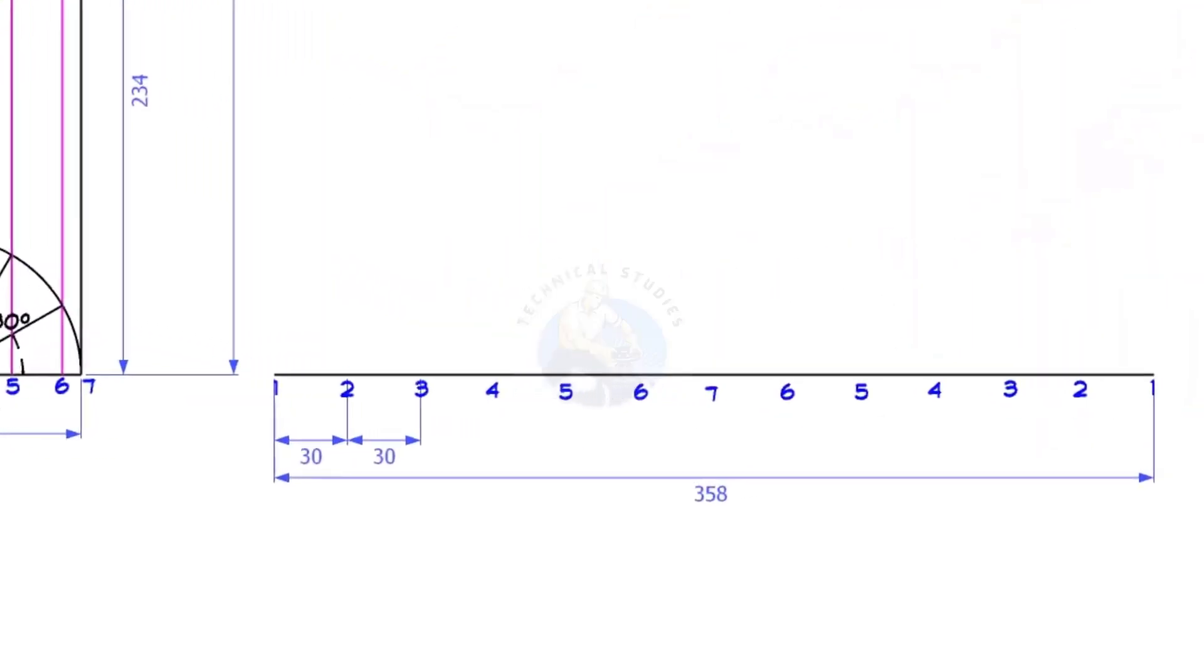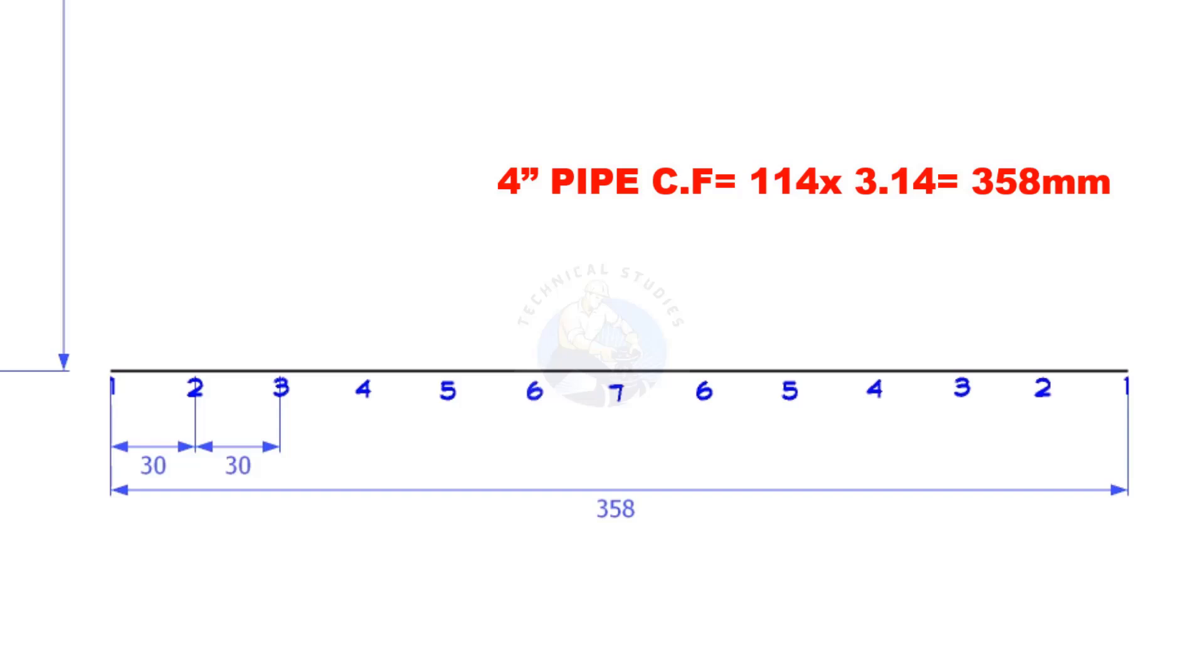Draw a straight line. The length shall be 358 millimetres, that is the circumference of the trunnion. Divide this line into 12 equal parts.